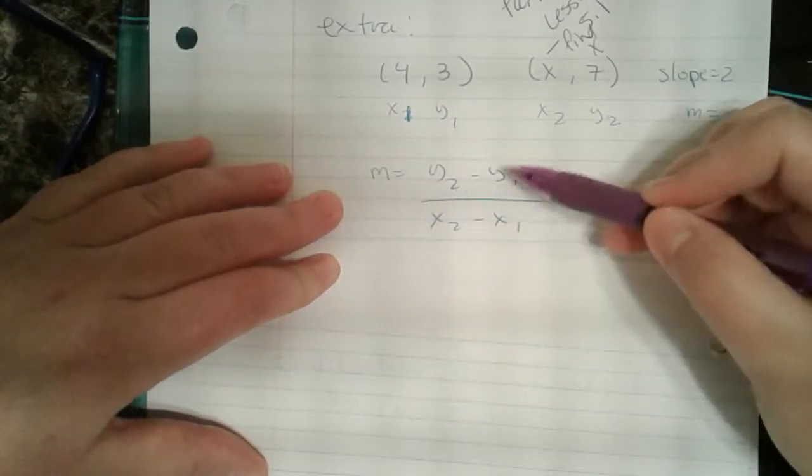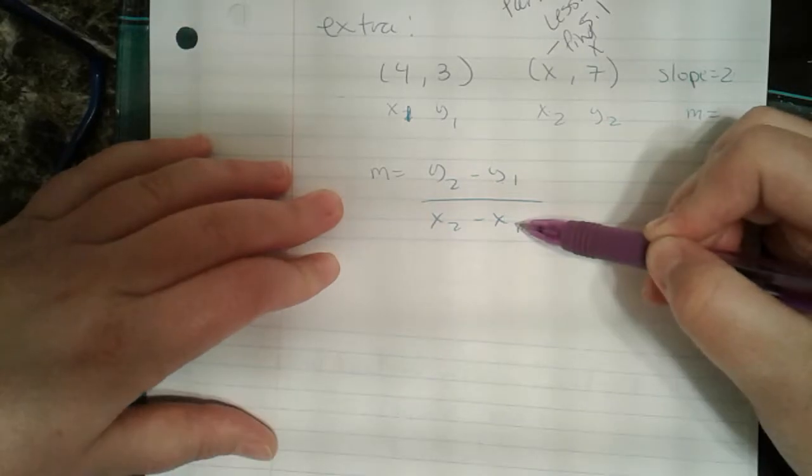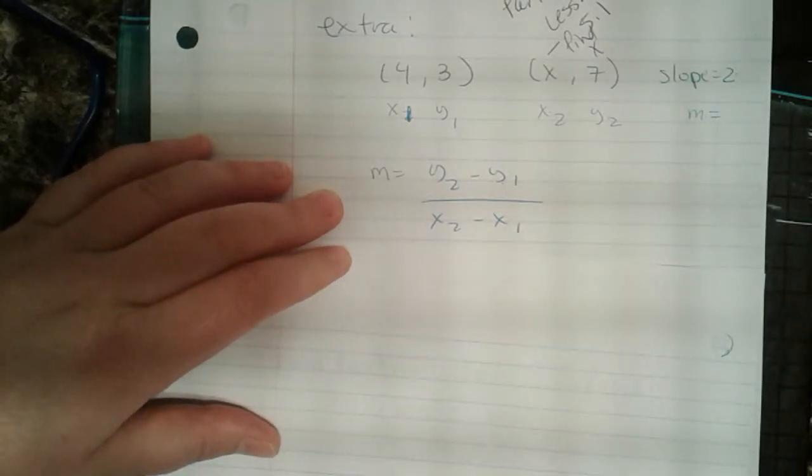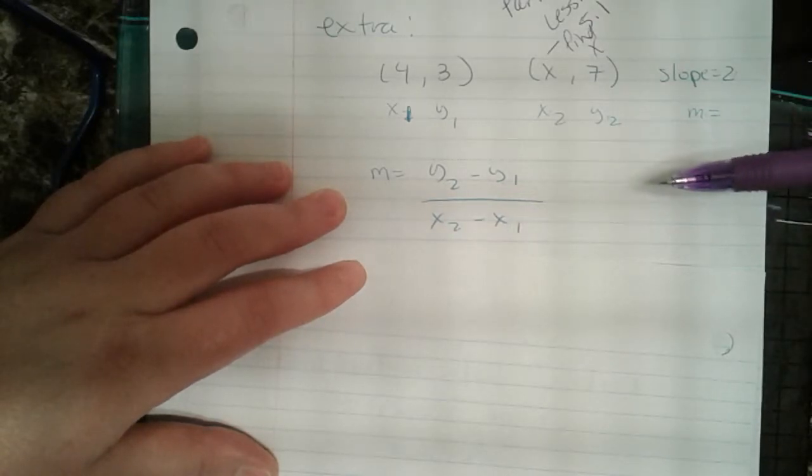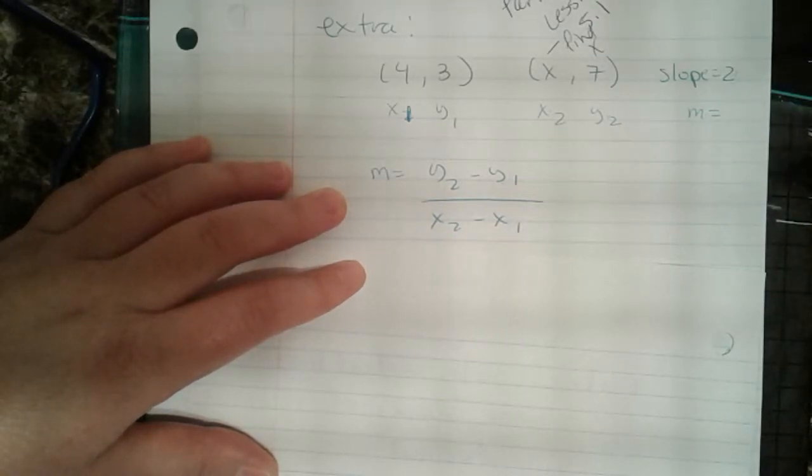M equals y2 minus y1 over x2 minus x1. That's cool. So we've labeled. We have our formula. So what do we do next? Good. We plug in. We plug in what we know.